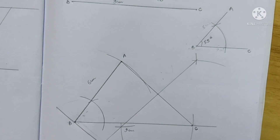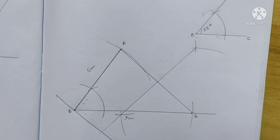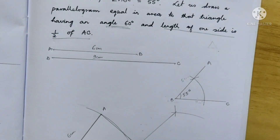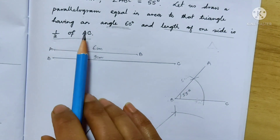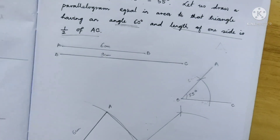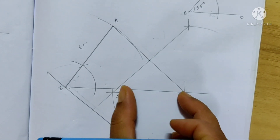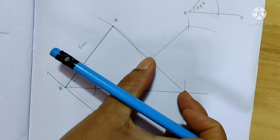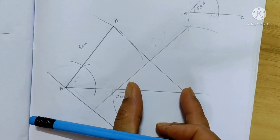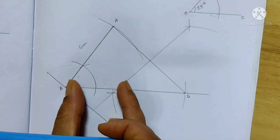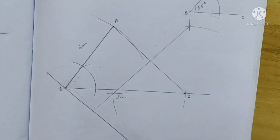Now comes the second part. After making the triangle, you know the second part involves bisecting the base. But here we must be careful because the question says the length of one side of the parallelogram is half of AC. Usually we take half of the base of the triangle, but in this question we are asked to take half of AC — not the base BC. That is why instead of bisecting BC, I need half of AC, so I am going to bisect AC.